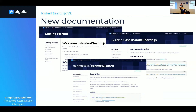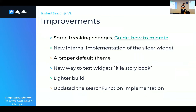This is very important to us — documentation is really key at Algolia, and this is one example of that. We also want to make overall improvements and we do have to make some breaking changes, but fear not, we have a migration guide thanks to the new documentation.